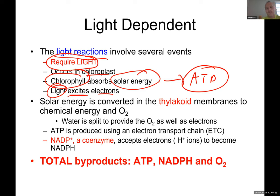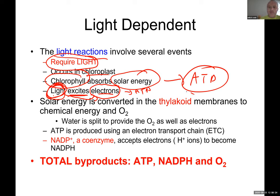Light excites electrons — it's kind of like giving sugar to a kid; it gets excited with a lot of energy. Electrons use light to get excited. The energy from light, through electrons, can be turned into ATP. That's where the ATP is going to be produced — in the thylakoid. As a byproduct of the first step, oxygen is released.